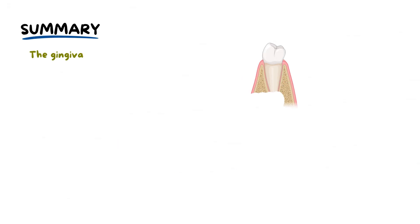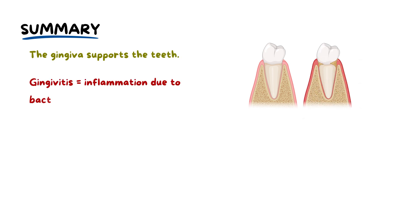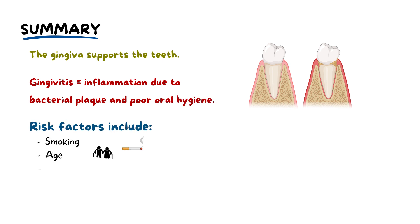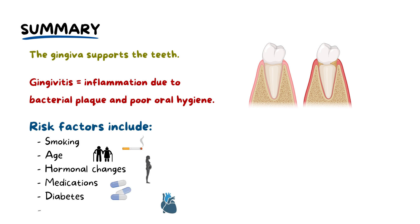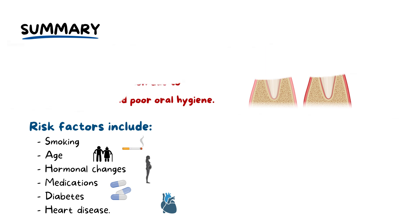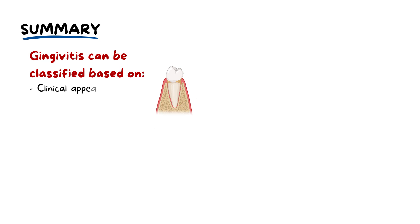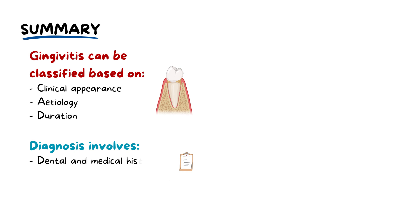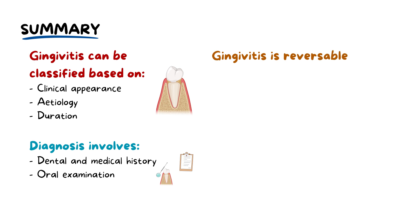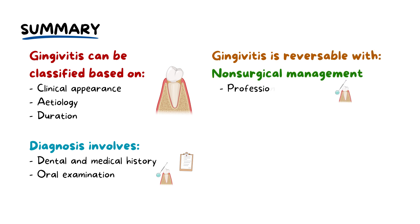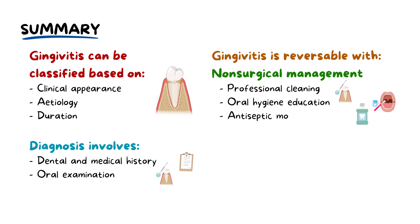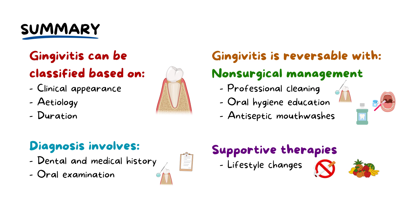To summarize: the gingiva provides tooth support but can become inflamed, leading to gingivitis due to bacterial plaque and poor oral hygiene. Risk factors include poor oral hygiene, smoking, age, hormonal changes, medications, diabetes, and heart disease. Gingivitis can also be classified based on clinical appearance, etiology, and duration. Diagnosis involves reviewing dental and medical histories and conducting an oral examination. Gingivitis is reversible with non-surgical management including professional debridement, oral hygiene education, and antiseptic mouthwashes where necessary. Supportive therapies include lifestyle changes like smoking cessation and managing underlying conditions; surgical intervention is rarely needed.